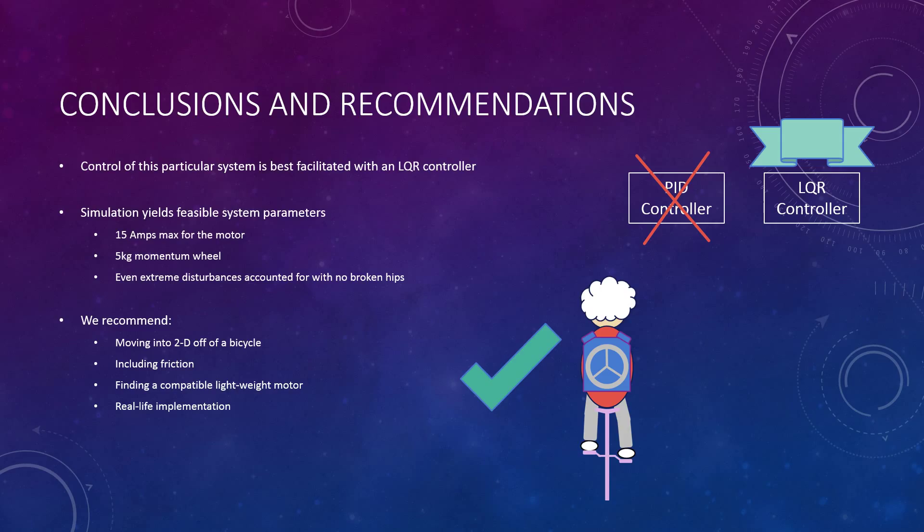So in conclusion, for our particular system we'd like to recommend a linear quadratic regulator style controller. It allows for the non-linearity of the system and is the best fit, we feel, for the design specifications that we had. It also yields some very reasonable parameters in real life. The motor for the flywheel, for the momentum wheel, never pulled more than 15 amps. The momentum wheel was of a reasonable weight on the order of 5 kilograms, which would be about 12, 11 pounds. And disturbances were properly accounted for even when they went to the extreme.